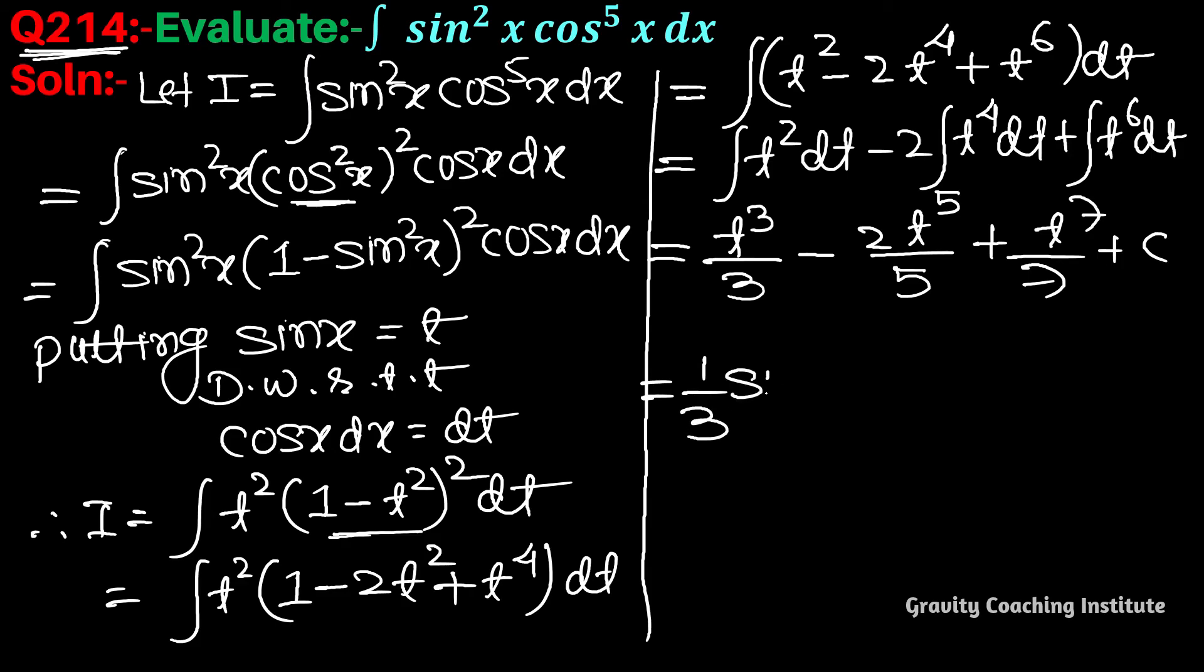This gives 1/3 sin³x - 2/5 sin⁵x + 1/7 sin⁷x + c. Answer.